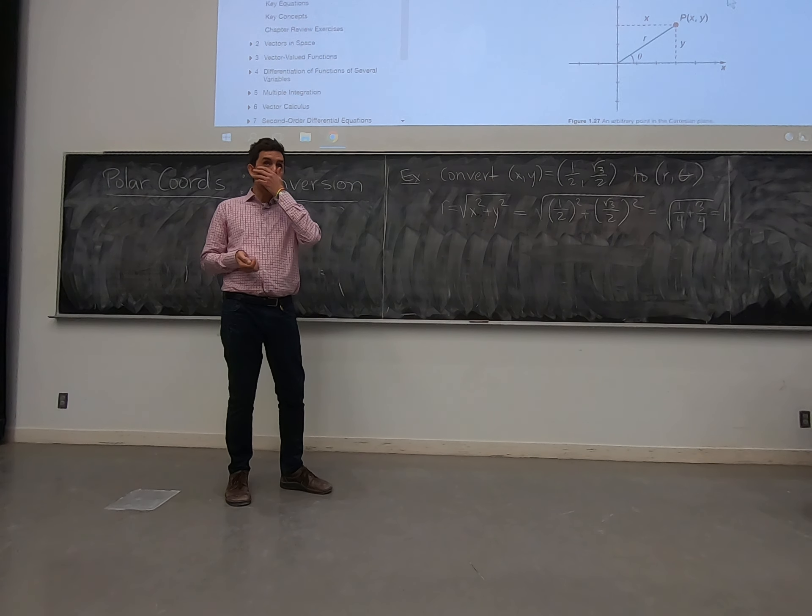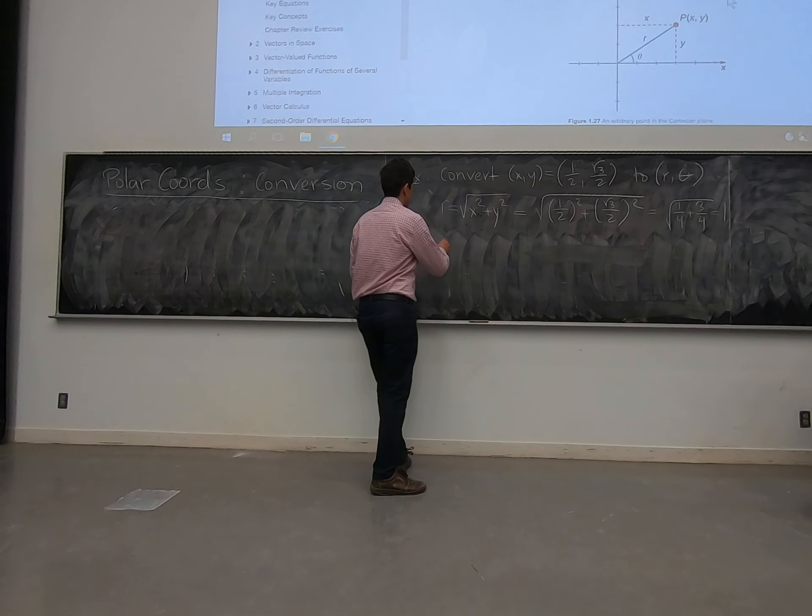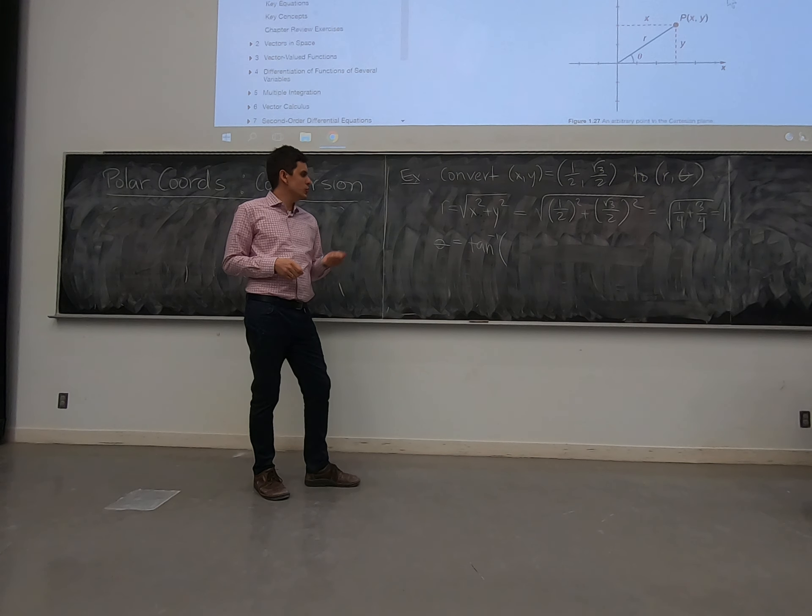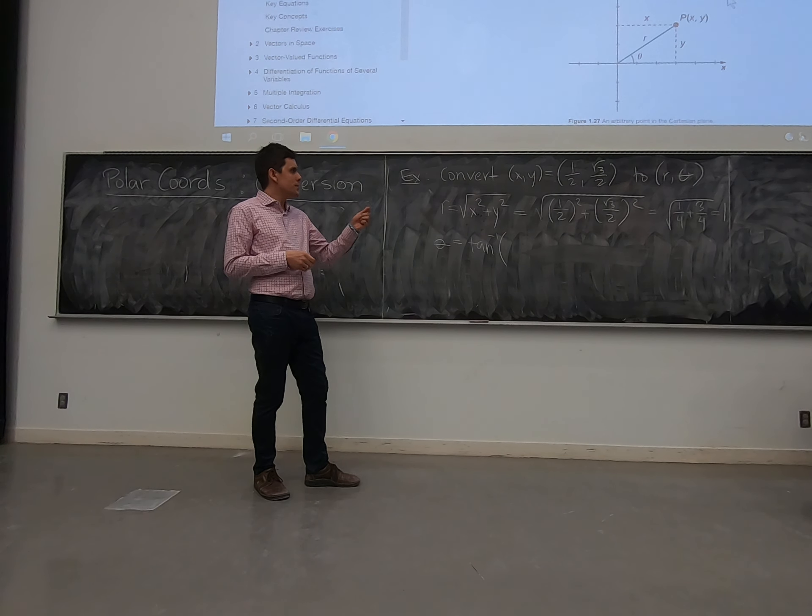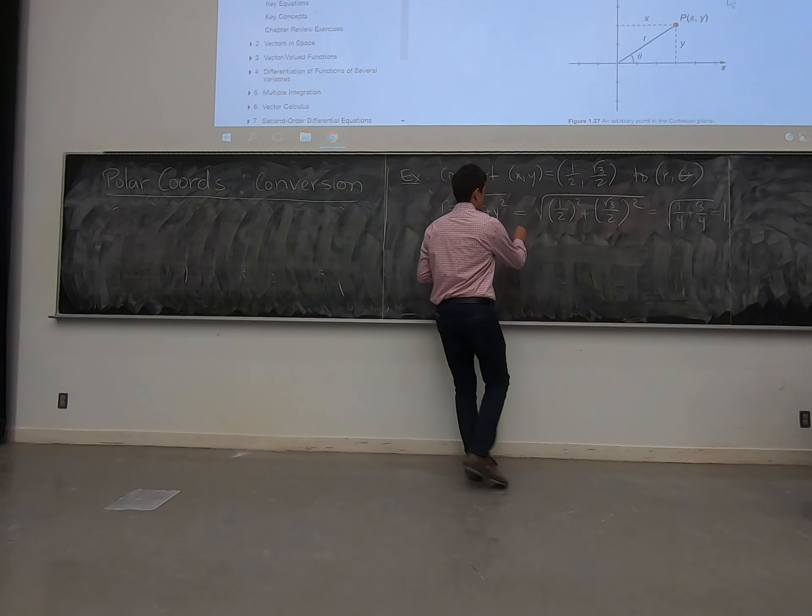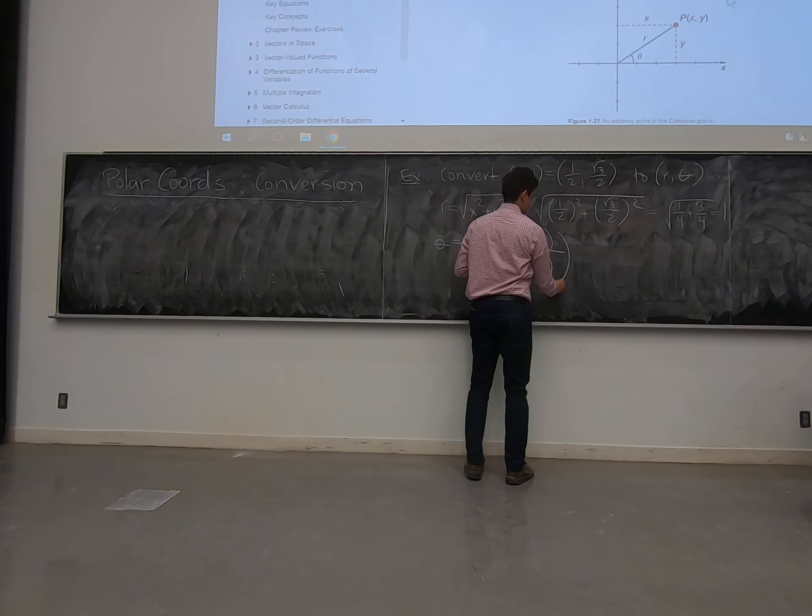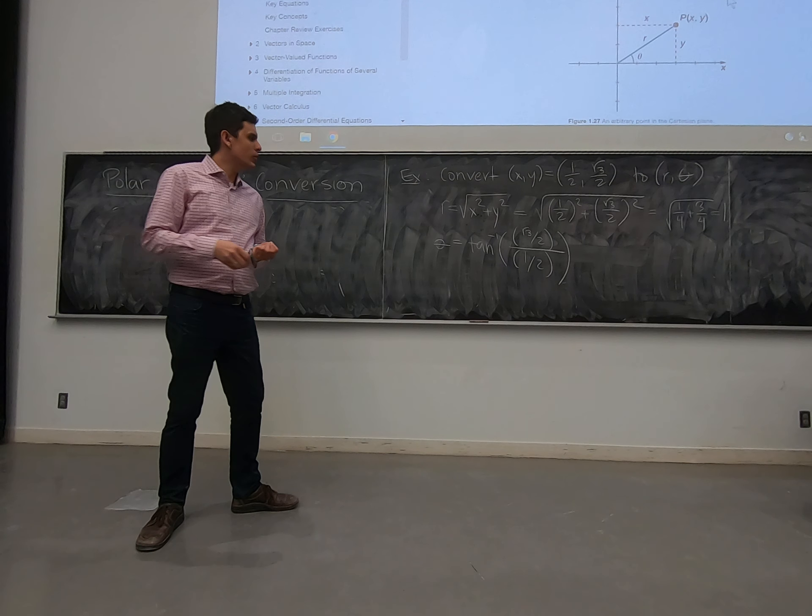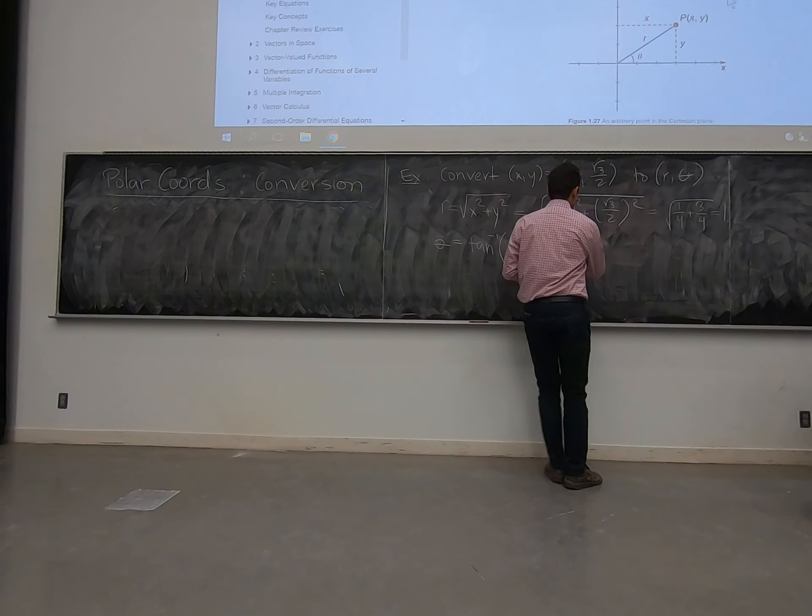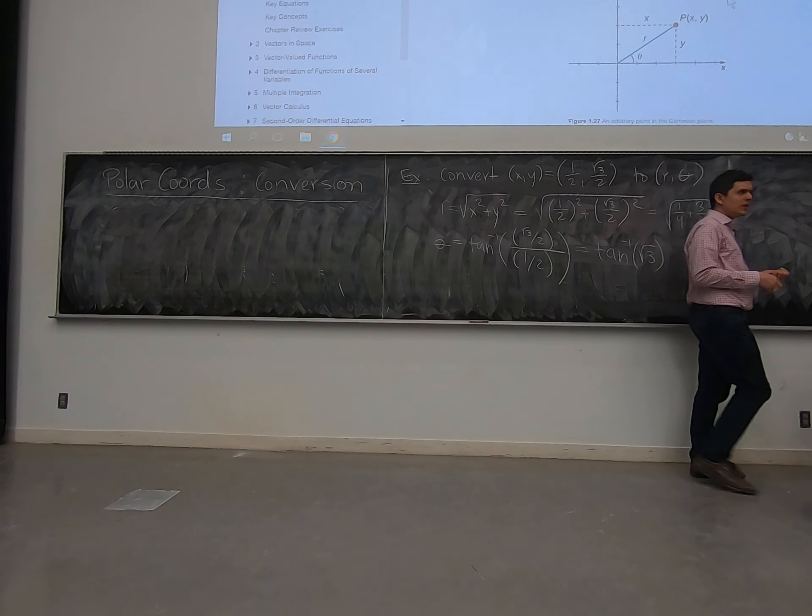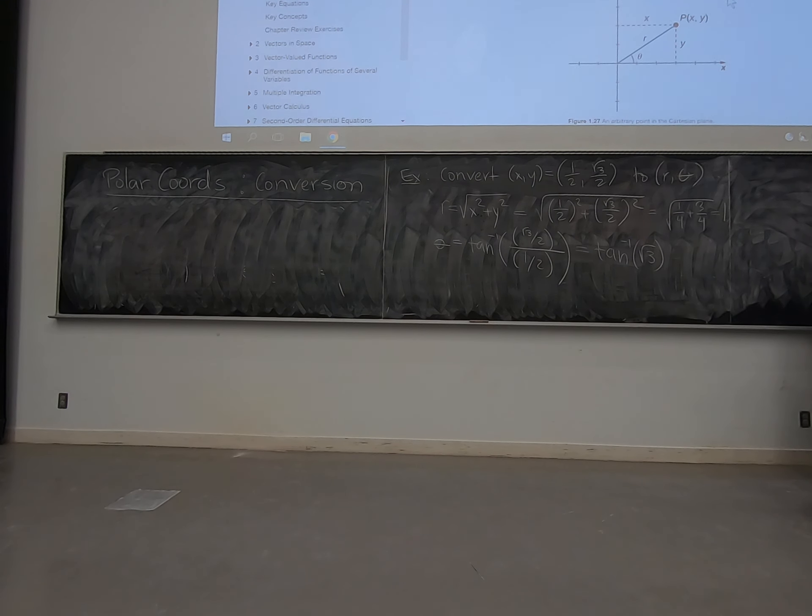Then we measure out the angle. We do tan of the opposite over the adjacent, so we're looking for tan inverse of root three. What's tan inverse root three?